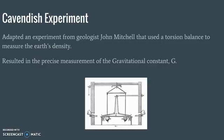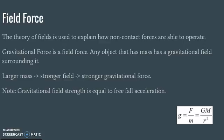Cavendish set up a torsion balance in which the gravitational attraction between two masses — two balls, one more massive than the other — caused measurable movement. He measured how much they moved based on gravitational attraction. To keep his presence from disturbing the experiment, he actually took all his measurements with a telescope from far away.